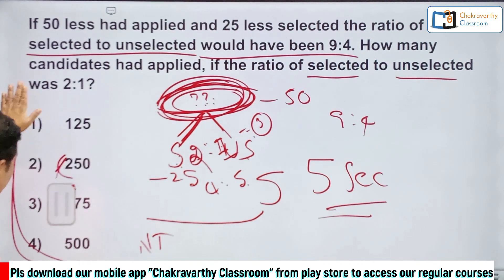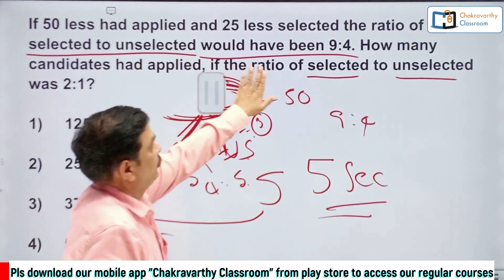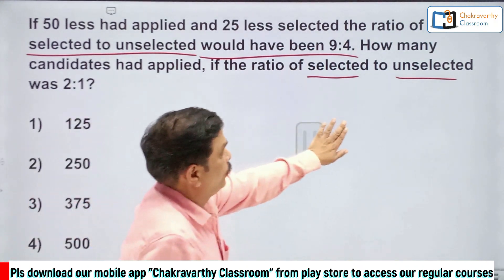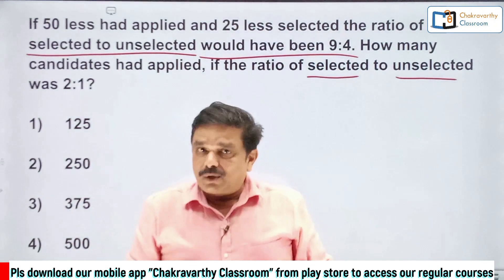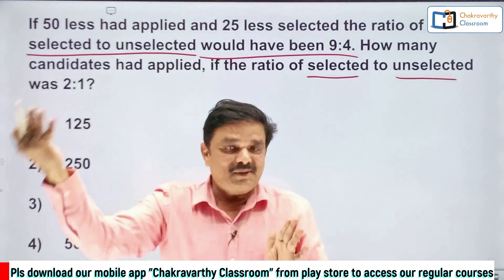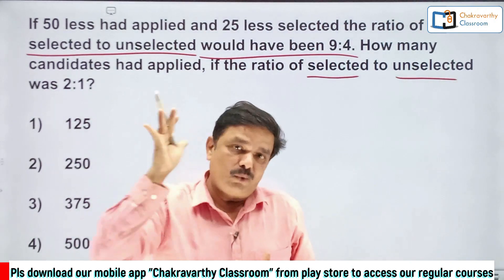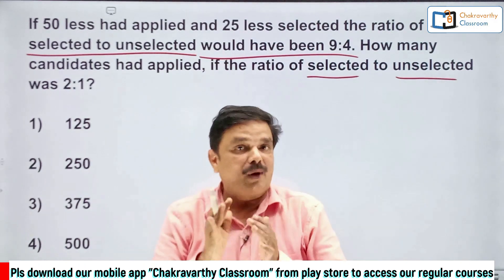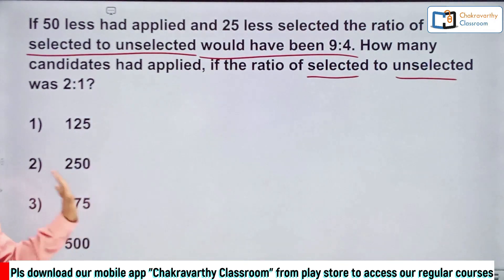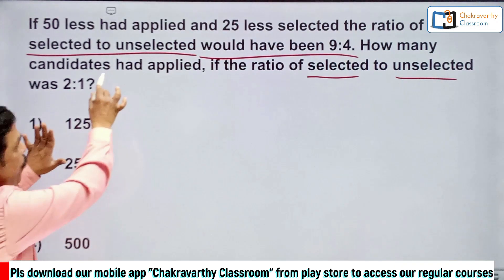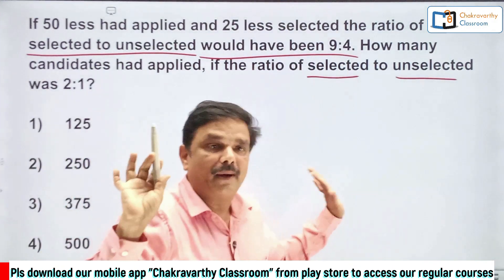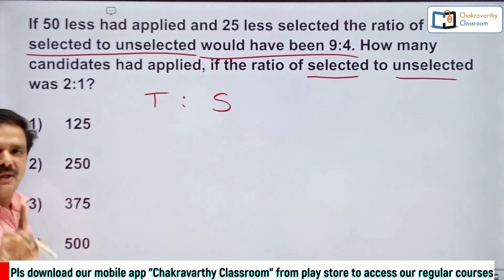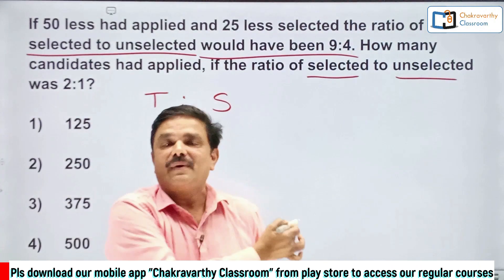I'll explain the shortcut we discussed in the foundation course. First, let me explain our developed shortcut; after that I'll show the same question using algebra. For all questions of this type, you take the total-to-selected ratio. Listen very carefully — this is applicable for all questions of this sort.